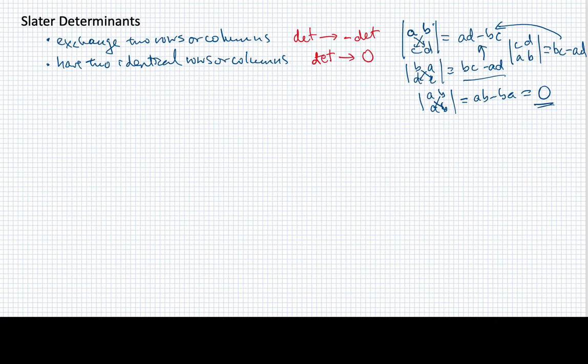These are pretty useful properties to have. We can take this mathematical form of a determinant and use it for our own purposes. What I want to do is suppose that I'm going to create a determinant, but instead of having numbers as my elements, I'm going to use spin orbitals. Let's suppose that I'm using some of the same spin orbitals we've used before for helium.